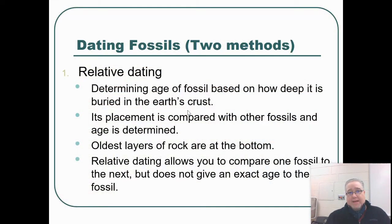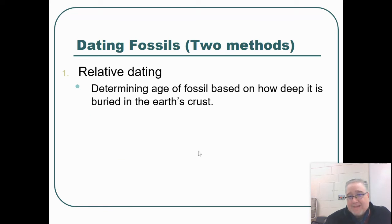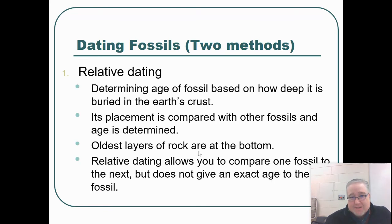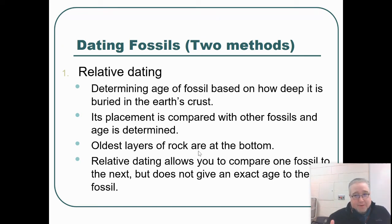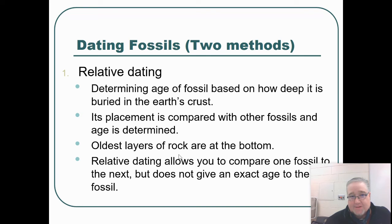We actually have two different ways to date fossils. One of them is called relative dating. Relative dating is basically just dating the fossil based on where it is in the strata of the rock. The deeper the fossil, the older it is. So if you've got 10 fossils all layered together, the one at the top will be the youngest fossil and the one at the bottom will be the oldest. That's called relative dating — dating fossils based on their depth within the Earth's crust.